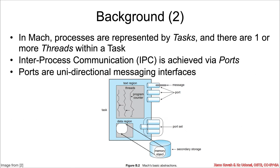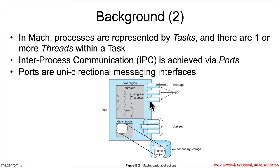We need to cover some terminology to understand the code in this section. In Mach, a process is called a task, and there are one or more threads inside of a task. The communication between the modular parts is achieved via interprocess communication — you'll see lots of code with IPC in its name for various structure types — and that IPC is done to things called ports. These ports are one-way, unidirectional messaging interfaces by which a task can receive information from other tasks.